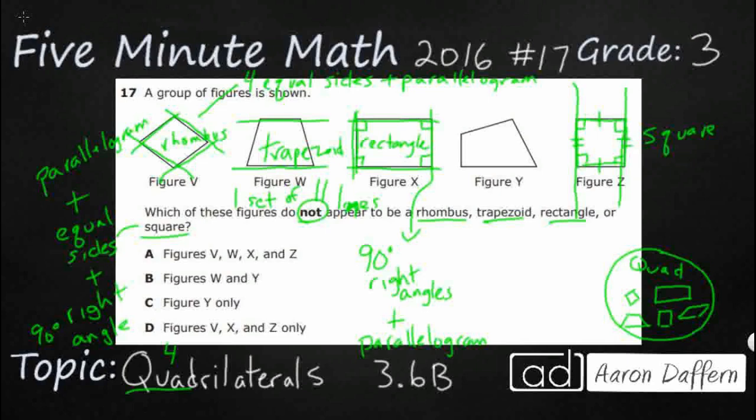And sometimes a trapezoid can look like the two sides that are not parallel can be both diagonal. And then sometimes it can be like this, kind of look like a half one.